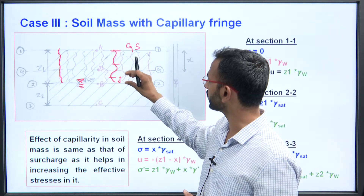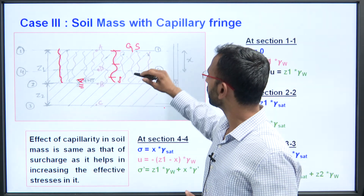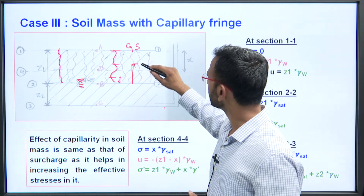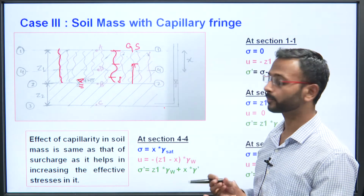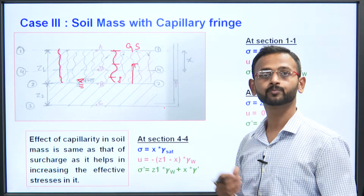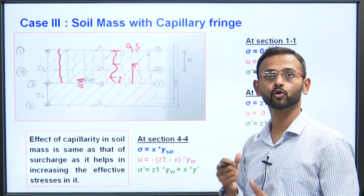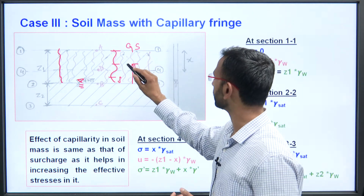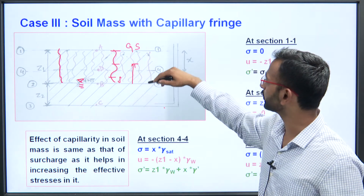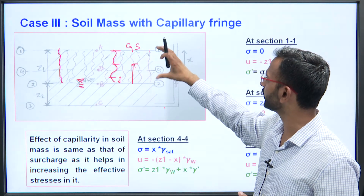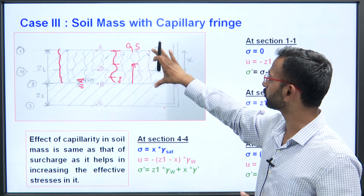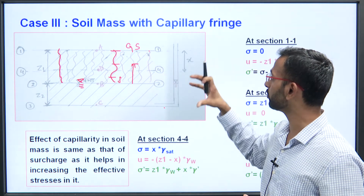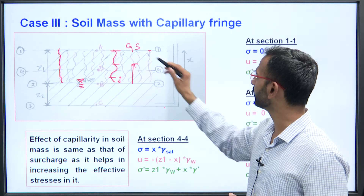As the height to be risen increases, the water must apply much more force to remain held in tension. Similarly, going higher up, the capillary tension becomes greater in magnitude and is expressed as a negative value.